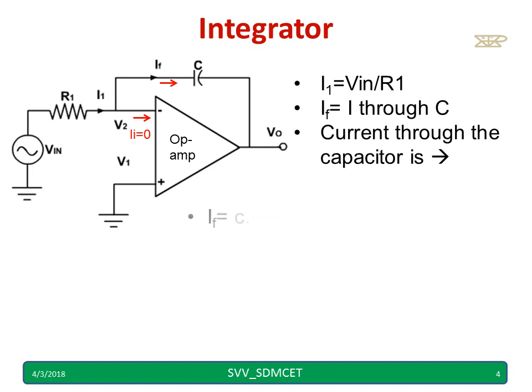IF is the current flowing through the capacitor and IF is given by C into dVc by dt, whereas Vc is the capacitor voltage. This is the IF what I am talking about.